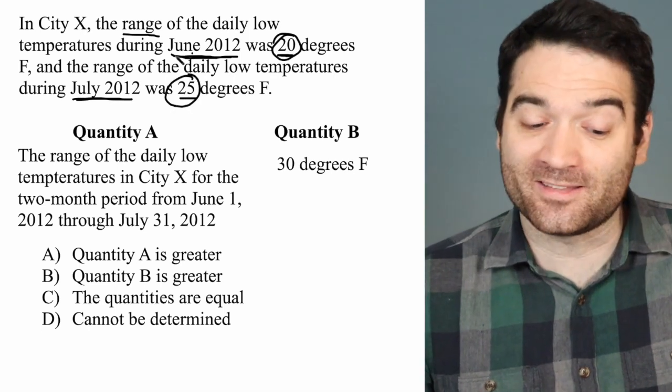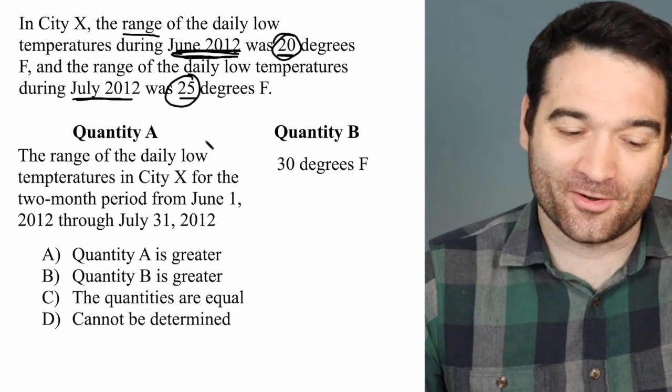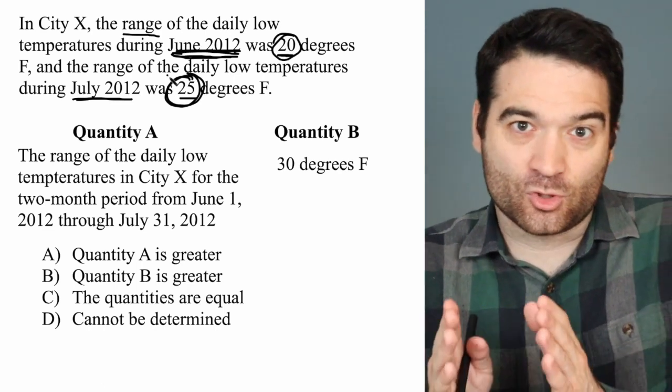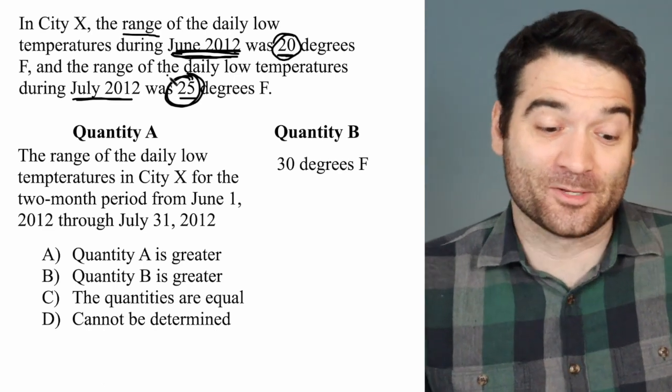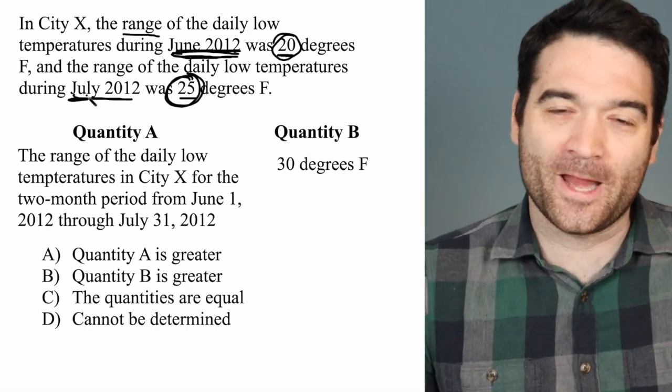It could well be that temperatures in June were freezing, within 20 degrees of each other, but temperatures in July were scorching, within 25 degrees of each other. Another possibility is that they were almost exactly identical, but July had a little bit wider of a range.